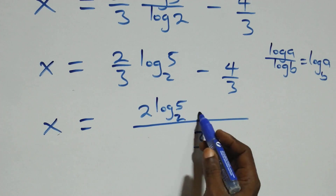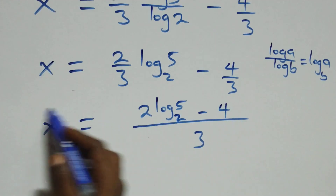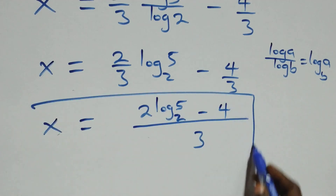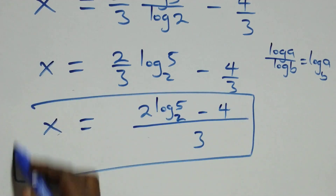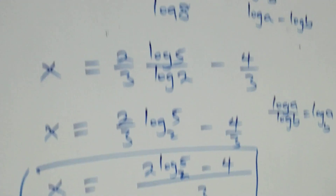So here we have the value of x in this problem: x equals (2 log₂5 minus 4) all over 3. Then let's check if this satisfies the given problem by substituting this value of x back in.